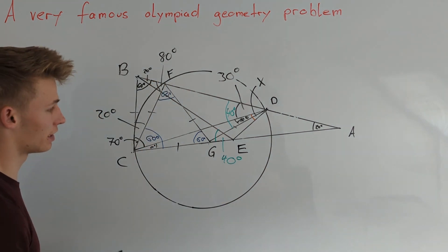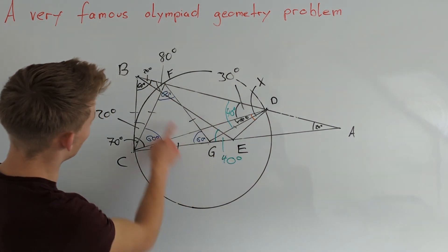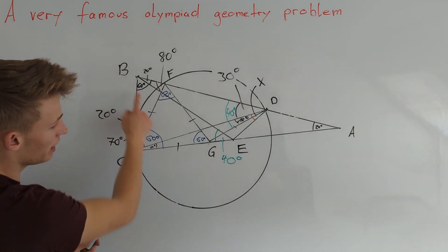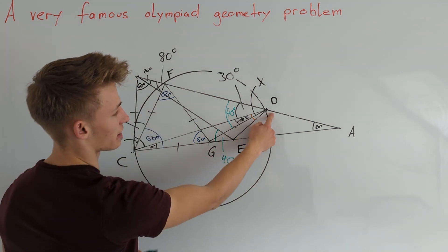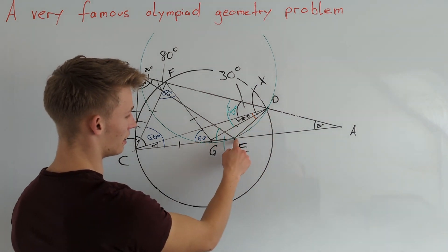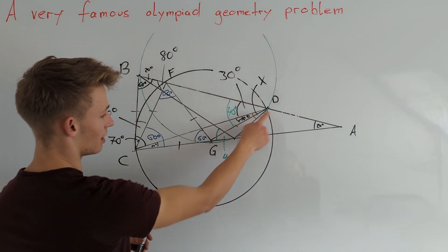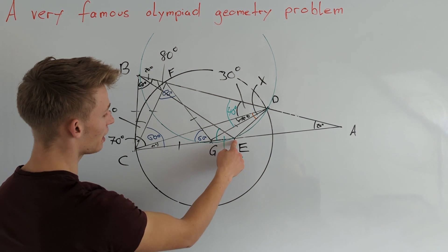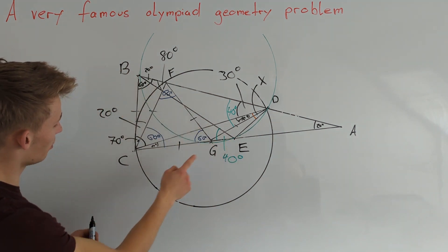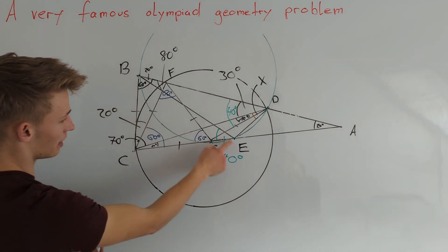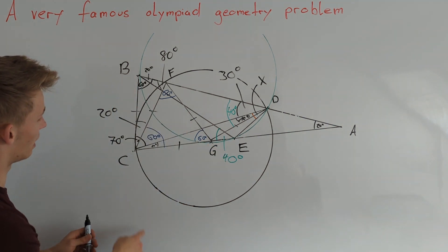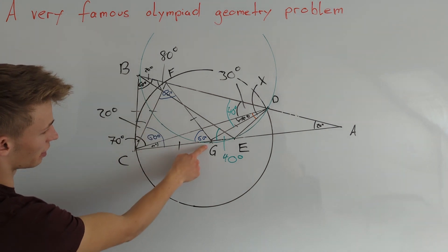Now we have two 40 degree angles over the base BG, and therefore the points B, G, E, and D must lie on a circle. Now we can say something about the angle GDE: namely, angle GDE is equal to angle GBE. Since we know angle CBE, we want to try to calculate the angle CBG.